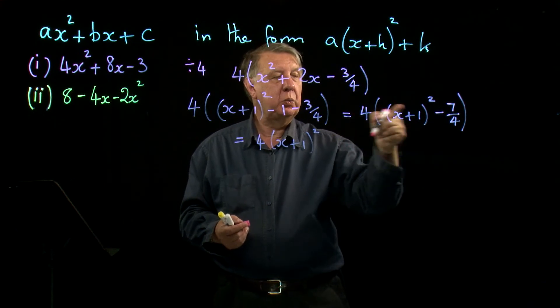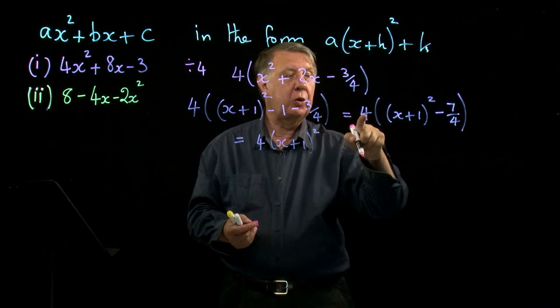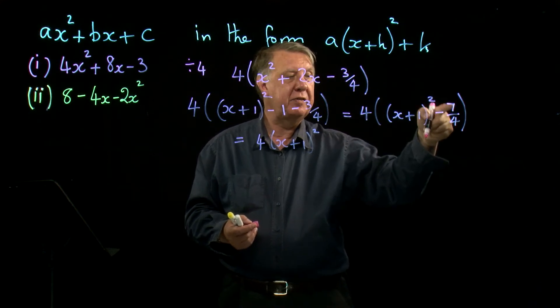I then have got to worry about this seven over four, but of course there's a four outside here, so four times seven over four is seven, giving me negative seven.